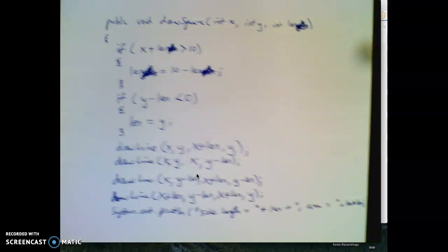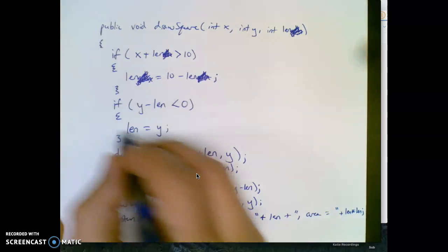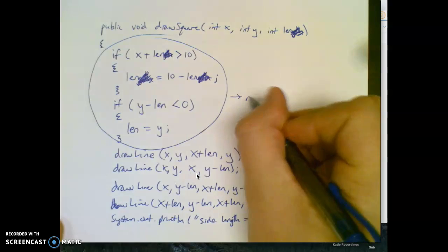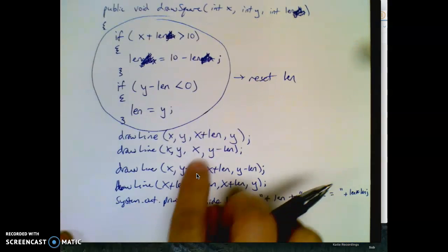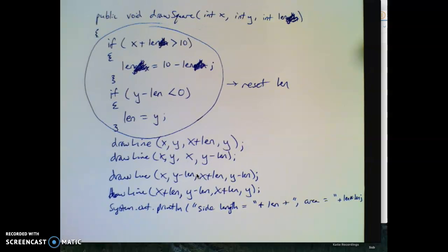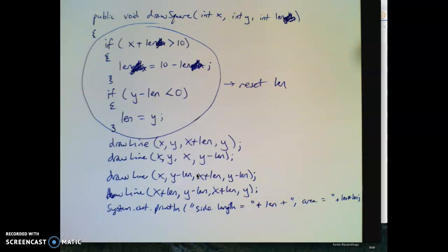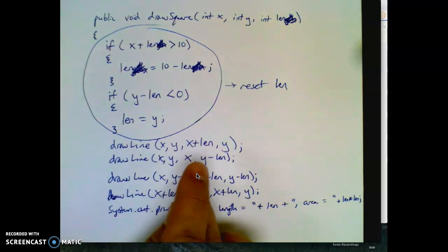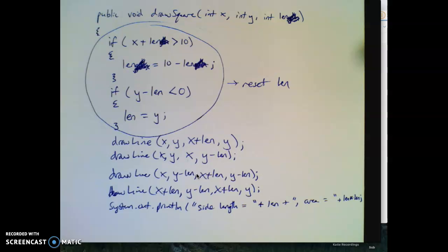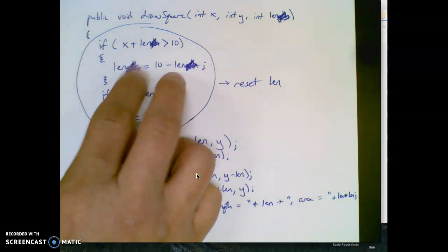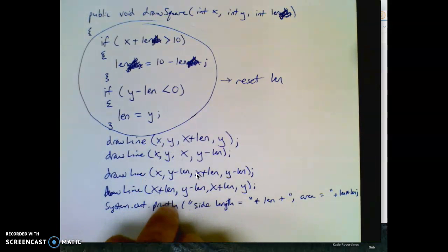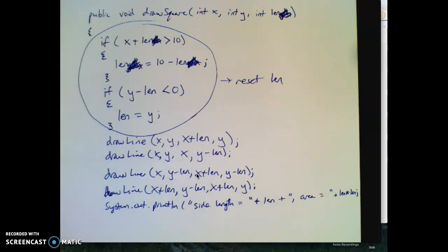Hopefully that clears it up. That was crazy — especially the length-resetting part. There's a lot of mental gymnastics involved. Even if you want to get every point you can, even if you just knew how to print out the length and the area, you get points for that. Even if you just knew how to use the draw statements and didn't get the ifs right, you could get most of the points without getting the ifs correct. So anyway, hope that made sense. Thanks.